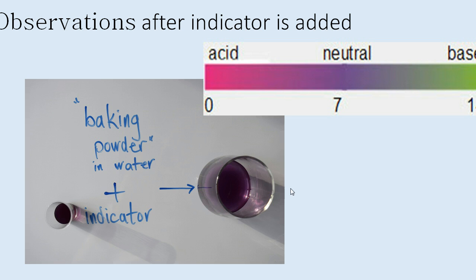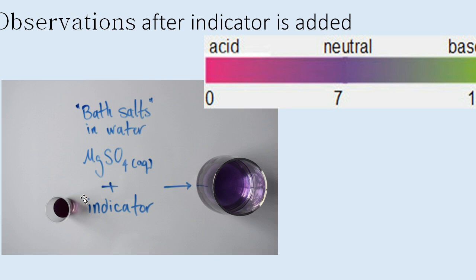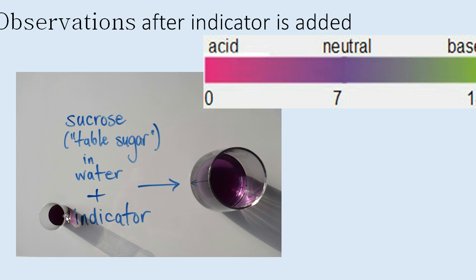Next, we have baking powder — quite a different chemical, you can tell — different color. There's the indicator added to the baking powder in water and we get that. Next, isopropyl alcohol — we will see its structure in unit two, but for now we've added the indicator and we get that. Ask yourself what that is. Here, bath salts and water — magnesium sulfate plus the indicator. There's the color — what do you think? Next, sucrose or table sugar — I've added the indicator to the table sugar solution and there's the color.